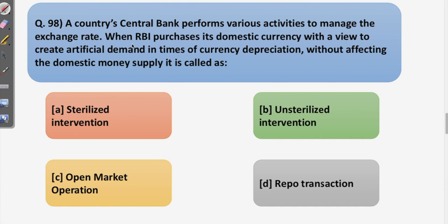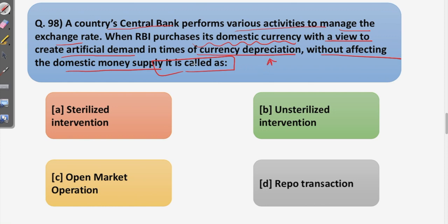The next question asks: the country's central bank performs various activities to manage the exchange rate. When RBI purchases its domestic currency to create artificial demand in times of currency depreciation without affecting the domestic money supply, what is it called? We all know that open market operations means buying and selling of government securities for the purpose of liquidity.